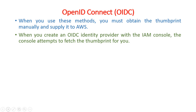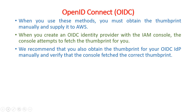When you create the OIDC identity provider with the IAM console, the console attempts to fetch the thumbprint for you, because it is a basic requirement to access and provide a trusted party against OIDC identity providers. If you have a thumbprint, OIDC easily provides your data and services to another account. We recommend that you also obtain the thumbprint from your OIDC IdP manually and verify that the console fetched the correct thumbprint. This concludes our discussion of the two concepts for today's lecture: OpsWorks and OpenID Connect.